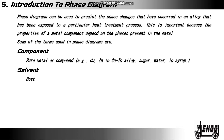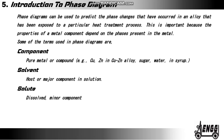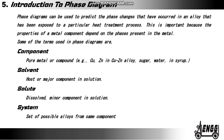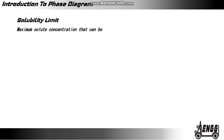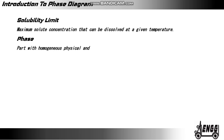Solvent: the host or major component in a solution. Solute: the dissolved minor component in a solution. System: the set of possible alloys from the same component, for example the iron-carbon system. Solubility limit: the maximum solute concentration that can be dissolved at a given temperature. Phase: a part with homogeneous physical and chemical characteristics.